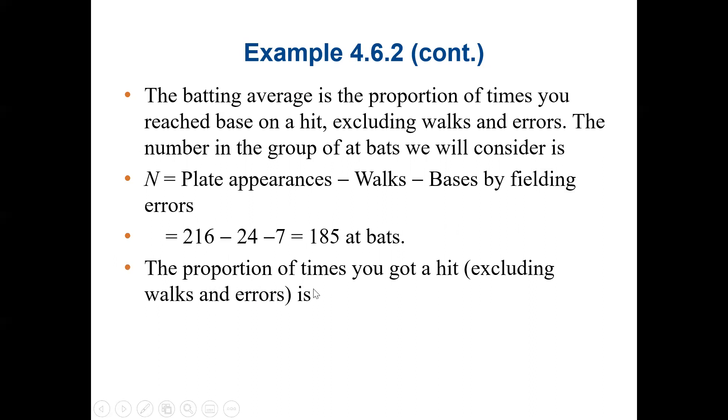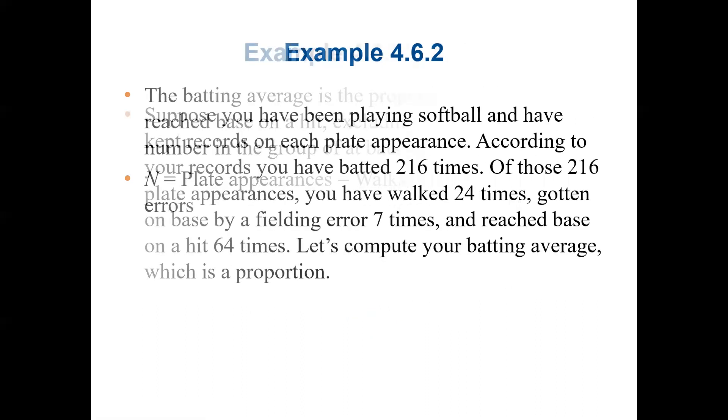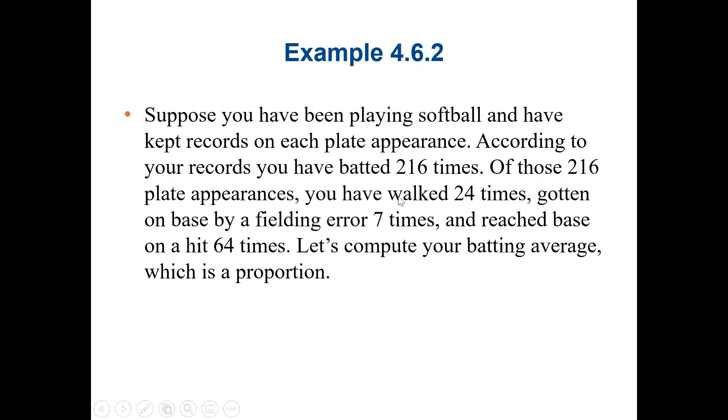To find the proportion, we calculate the proportion of times you got a hit, excluding the walks and errors. So we exclude the walks, which is 24, and errors, 7. It will be 64 divided by 185, instead of using the 216. Again, when we look at the equation, we will see that 216 is supposed to be the total. According to your records, you have batted 216 times, so that is the total. But of those 216 plate appearances, you have walked 24 times and gotten on base by fielding error 7 times, and reached base on a hit 64 times.